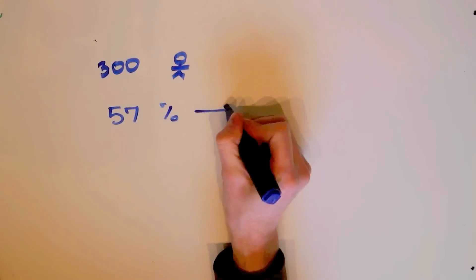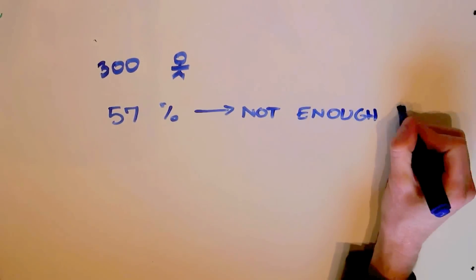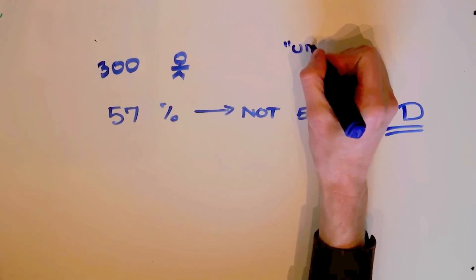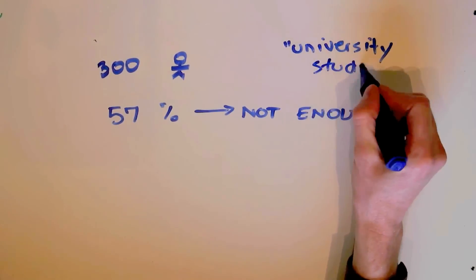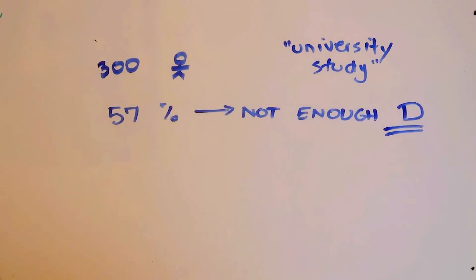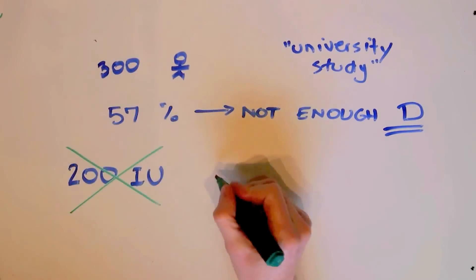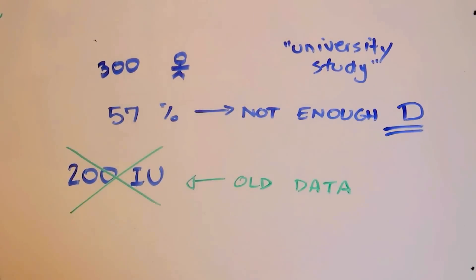There was a study done in a hospital, and it was a university study, where it said that 57% of the people in this hospital, in general, of all ages, need more vitamin D. They didn't have enough. And they said that was about 200 IU. What's interesting is that's old data.